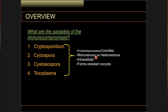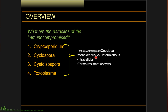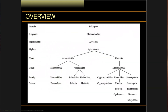Heteroxenous parasites have two hosts to complete their life cycle, and among these four, this would include Toxoplasma. Please remember that all four of these are eukaryotes — they are multicellular organisms, they contain organelles, and they possess complex metabolic processes. As you can see in this taxonomic classification, they all belong to class Coccidia and they are all eukaryotes.